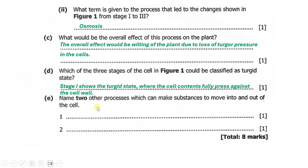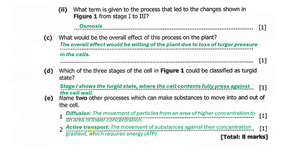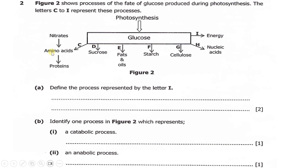Part (e) asks us to name two other processes which can make substances move into and out of the cell. The first process is diffusion, which is the movement of particles from an area of higher concentration to an area of lower concentration. The second process is active transport, which is the movement of substances against their concentration gradient, requiring energy in the form of ATP.